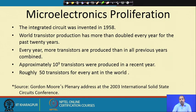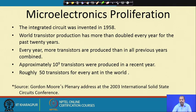If you sum up all the transistors produced till last year, this year it is going to double that sum — that is exponential growth in transistor production. Approximately 10 to the power of 9 transistors were produced in a recent year, which is roughly 50 transistors for every ant in the world.